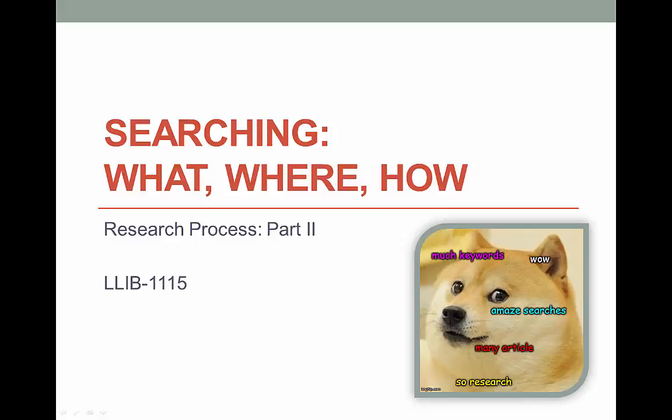After last week we should have a topic or at least an idea of what we want to research. This week we're going to talk about how to search for information in a way that will help you sort the good stuff from the less than useful stuff. We librarians like to call this process creating search strategies, because it's more than just randomly typing words into Google — you are actually going to be strategic about your search.